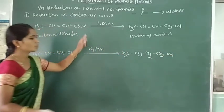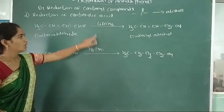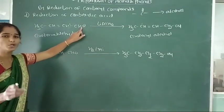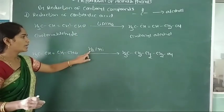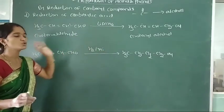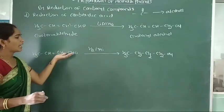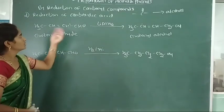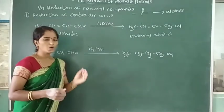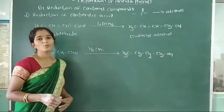This is the difference between these two reducing agents. Lithium aluminium hydride reduces only the carbonyl group. But hydrogen in presence of nickel catalyst reduces both carbon-carbon double bond and the carbonyl group. This is another method for preparation of alcohol from reduction of carbonyl compounds.